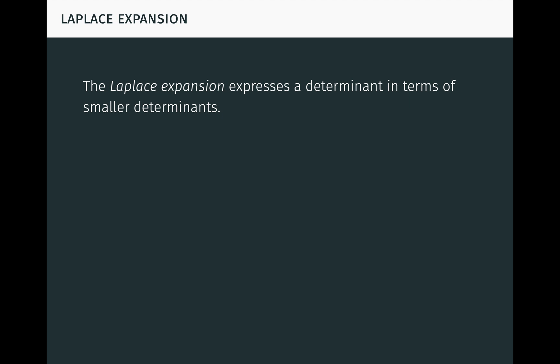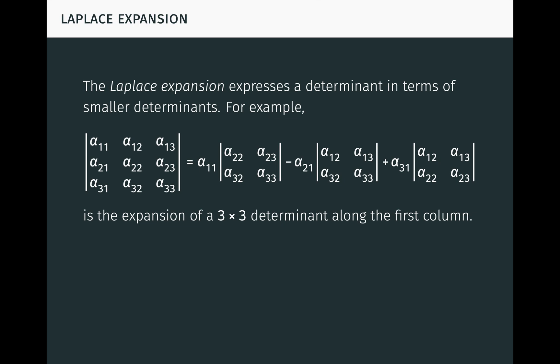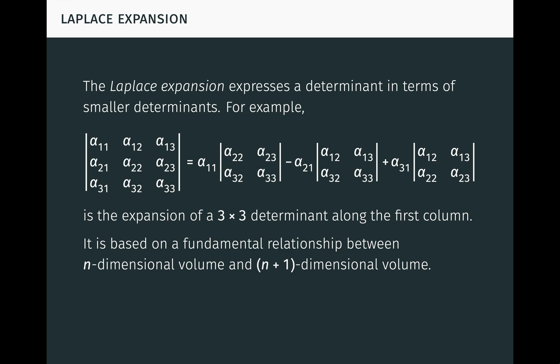The Laplace expansion expresses a determinant in terms of smaller determinants — more specifically, it expresses an (n+1)-by-(n+1) determinant in terms of n-by-n determinants derived from the original. For example, this is the expansion of a 3-by-3 determinant along the first column. The elements of the first column — α_{11}, α_{21}, and α_{31} — appear as coefficients of the 2-by-2 determinants, with a minus sign in front of α_{21}. Each 2-by-2 determinant is obtained from the original by deleting the row and column in which its coefficient appears. This expansion is based on a fundamental relationship between n-dimensional and (n+1)-dimensional volume, and can also be derived using the adjoint introduced in the last video. Let's take a look at that derivation now.